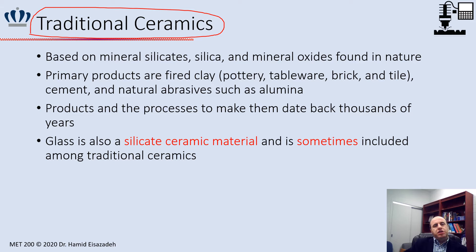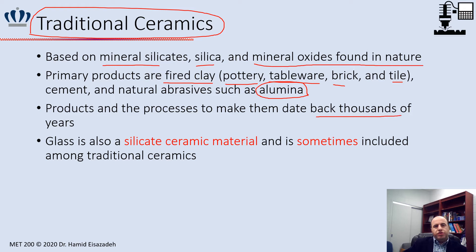Traditional ceramics are based on mineral silicates and other mineral oxides found in nature. The primary products of traditional ceramic include fireclay, pottery, tableware, brick, tile, and natural abrasives such as aluminum oxide. Traditional ceramics have a long history going back thousands of years. Sometimes glass is also included in the traditional ceramic category, since glass is a silicate ceramic material.